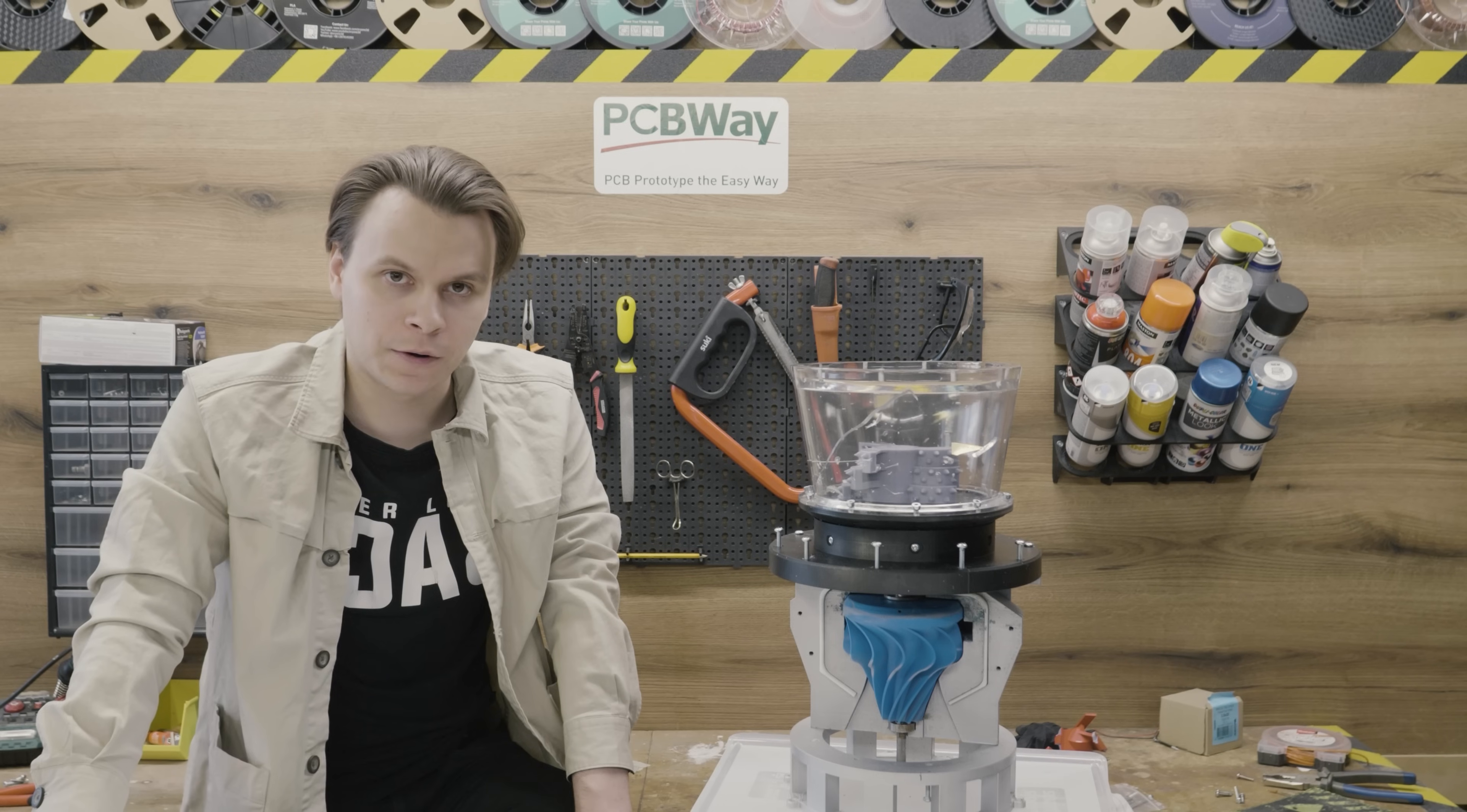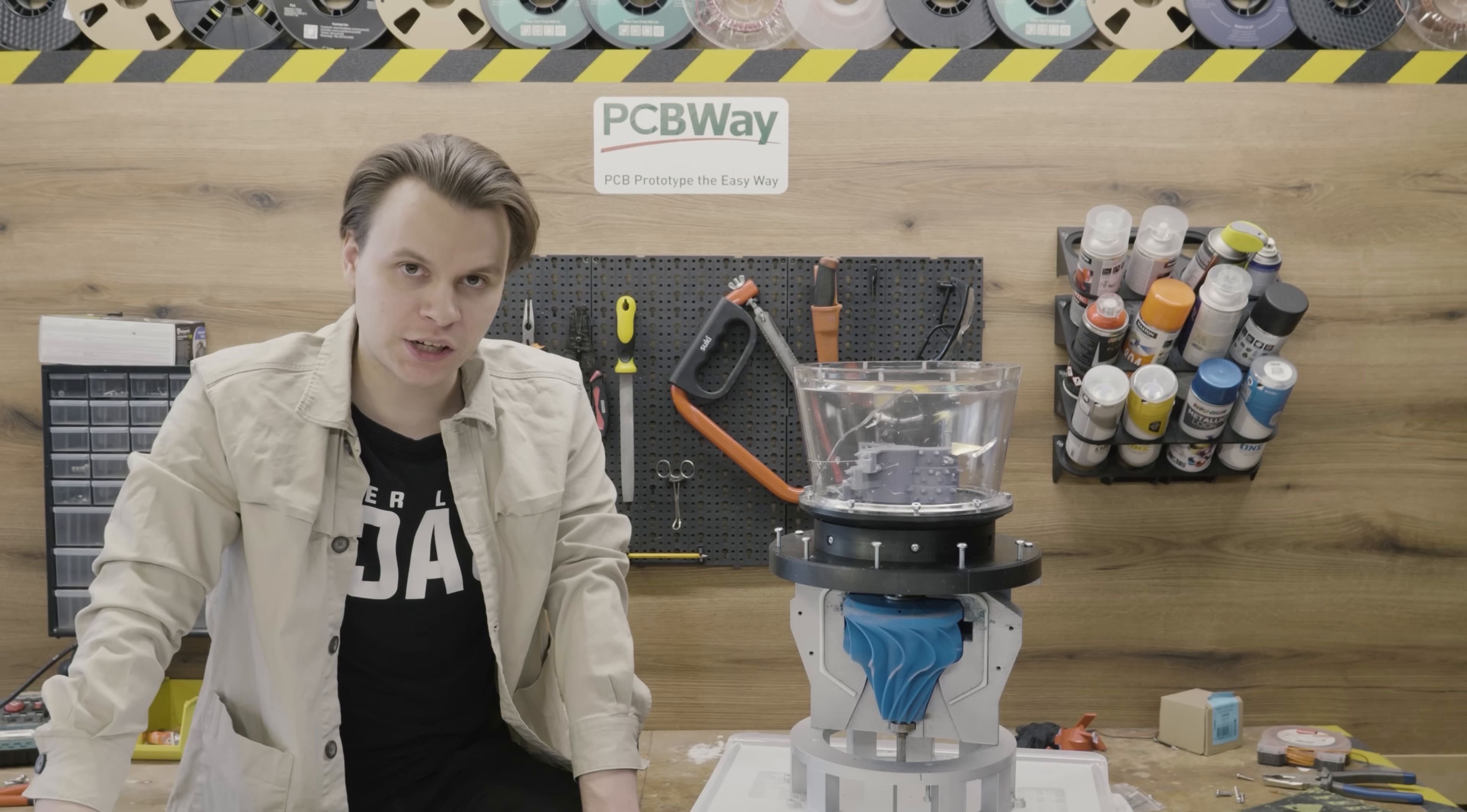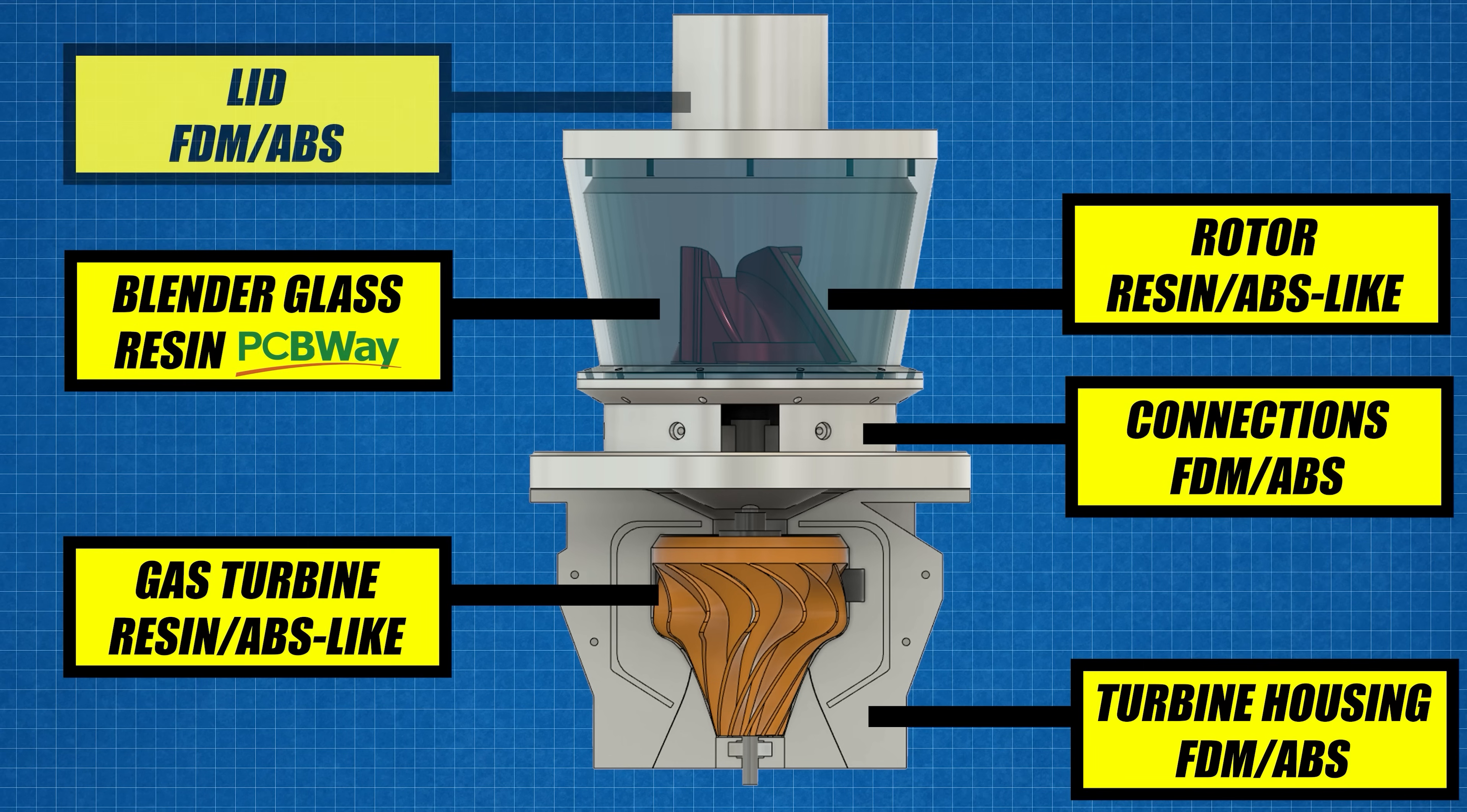The turbine I took from my last project where I built a multi-stage compressor. I just removed the compressor section and put blender on top of it. The whole project contains mostly 3D printed parts, combination of resin and FDM prints. Things like bolts, shaft and couplers are not 3D printed.